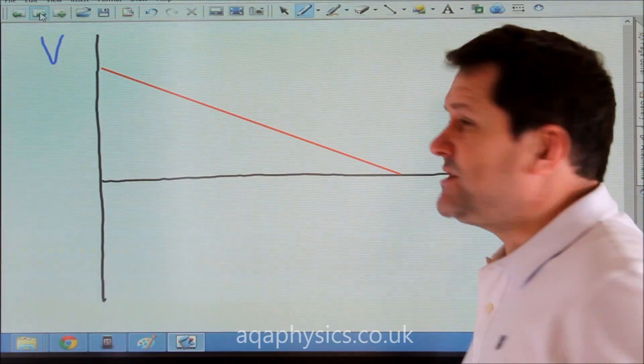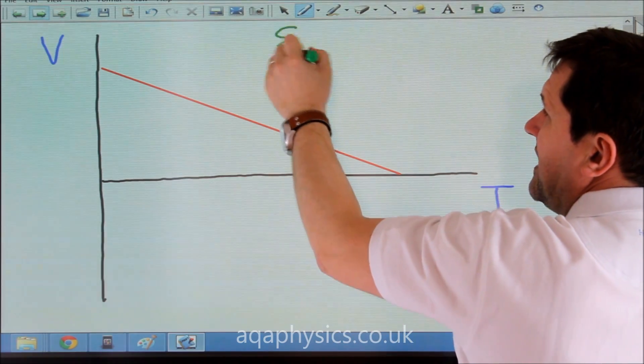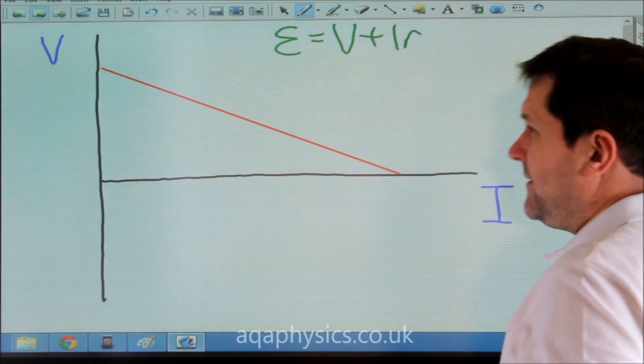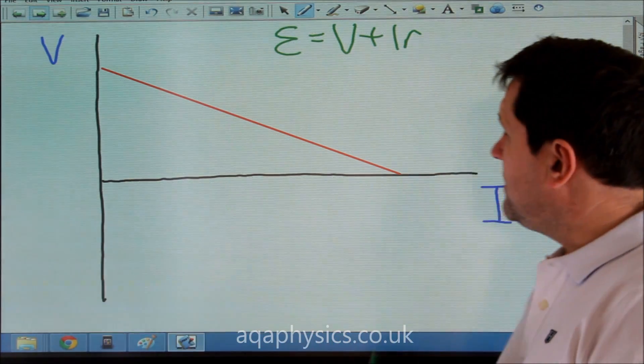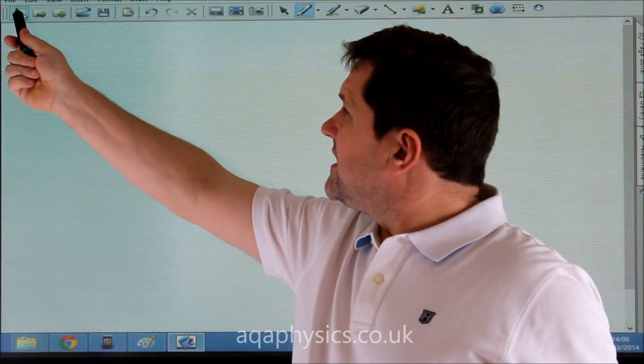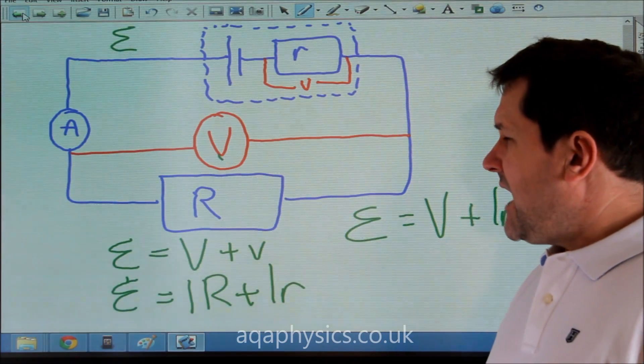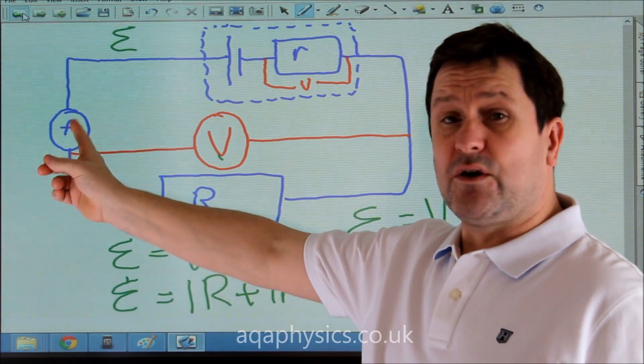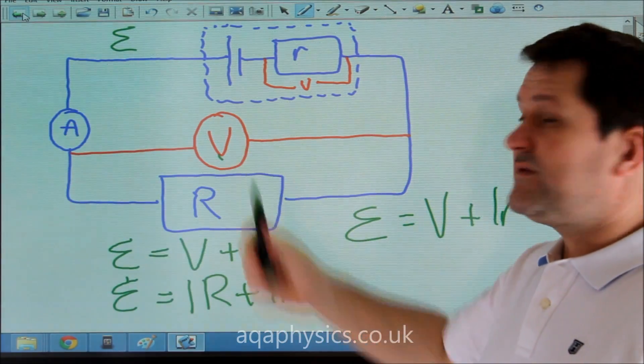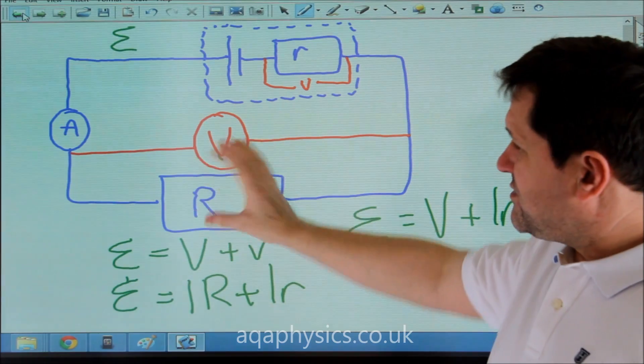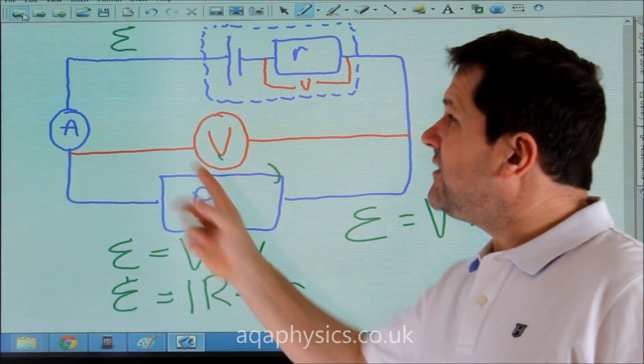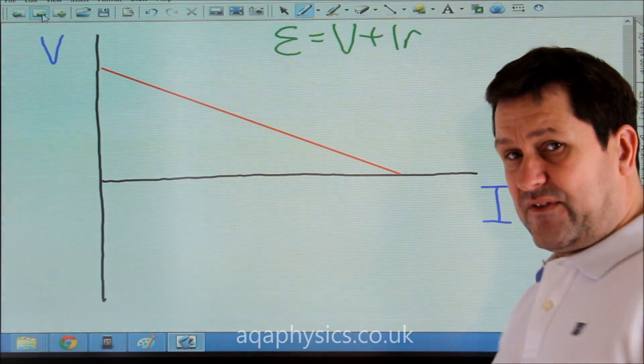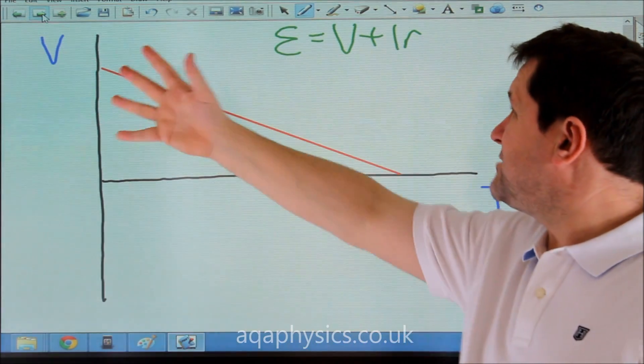So if we were given a problem such as this, and we remember our EMF equals voltage plus I r. If we were looking at our circuit here, and if we changed our resistor here, we would get different readings for current, and we'd get different readings for voltage. So if this was a variable resistor, and we could look at the current and the voltage characteristics, we could see that we could draw a graph of it. And if we drew a graph of it, we'd get this pattern here.